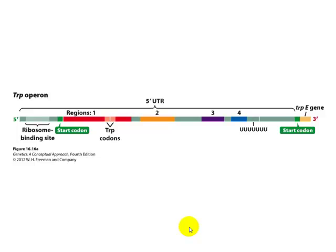The start codon, to begin transcription and subsequently translation, is right after the promoter region. There are two sites coding for tryptophan right there in region 1. Because this is bacteria, transcription and translation are coupled. So as your RNA starts to come out and RNA polymerase is making the messenger RNA, ribosomal subunits will get together right away and start making the protein. Right after region 1, there are two codons that call for tryptophan.